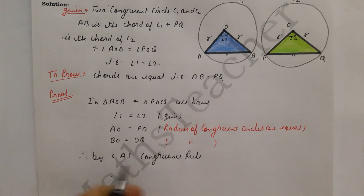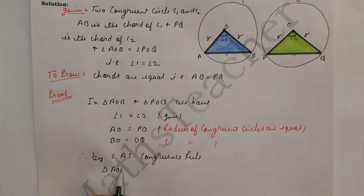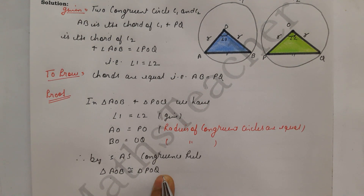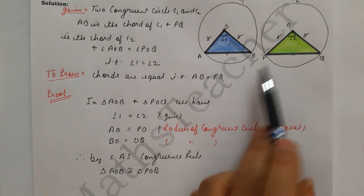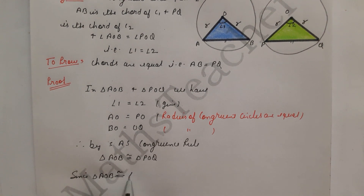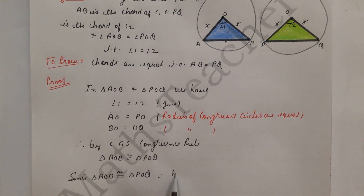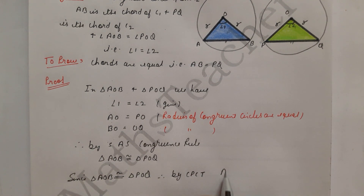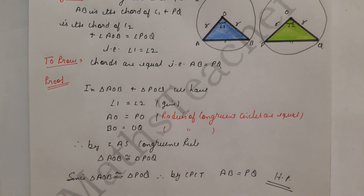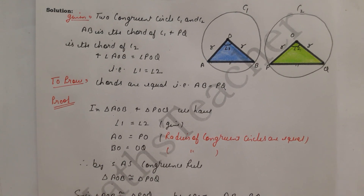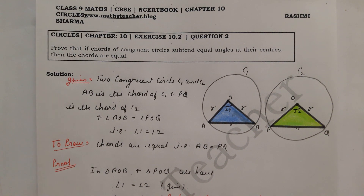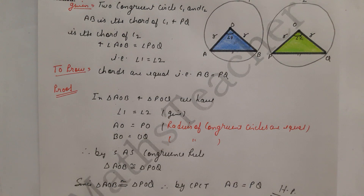By the Side-Angle-Side congruence rule, triangle AOB is congruent to triangle POQ. Since triangle AOB is congruent to triangle POQ, therefore by CPCT, AB equals PQ. We have proved it. This is a very simple theorem — Exercise 10.2. There was one circle; here there are two congruent circles. If you have not understood any step, please comment in the box. Thank you.